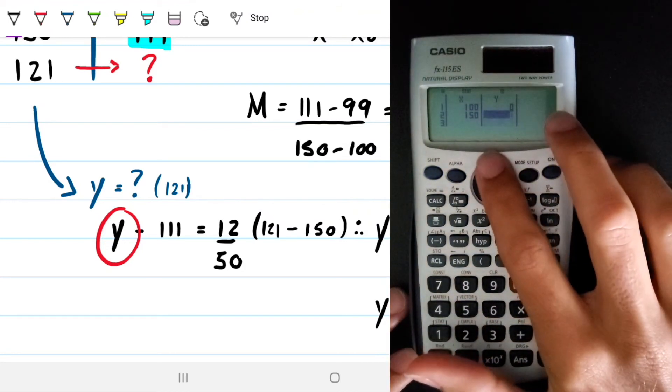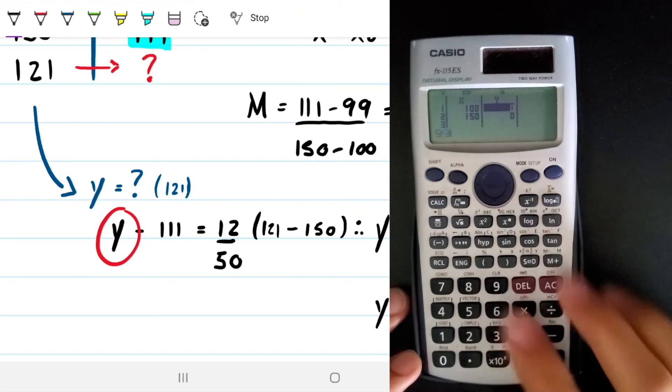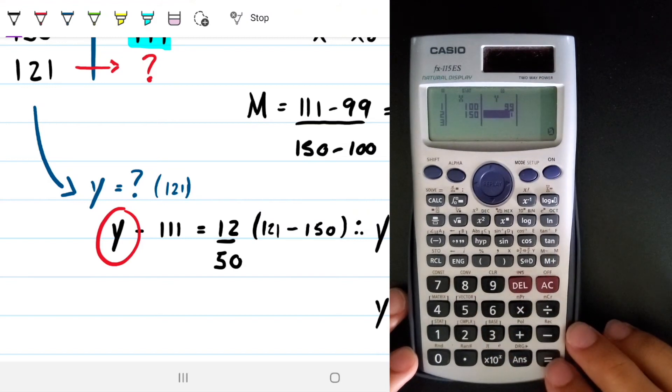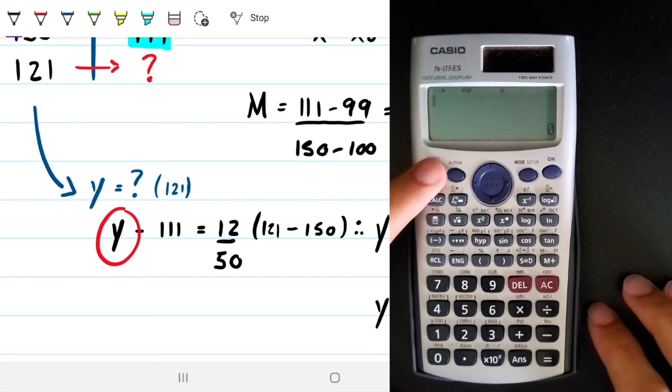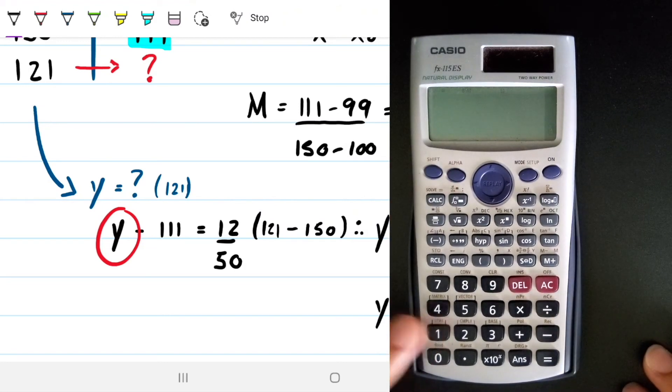And on the Y, when temperature is 100, pressure is 99. Equal. And when temperature is 150, pressure is 111. So 111. Equal. Perfect. Once I get here, AC. And then I go shift, stat. See stat number one here, stat.